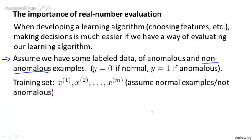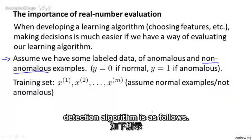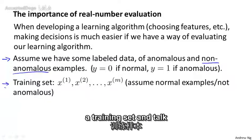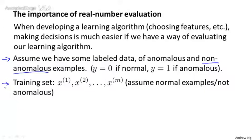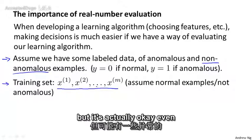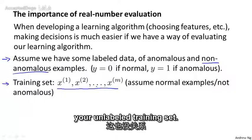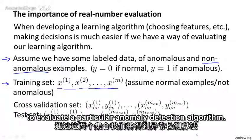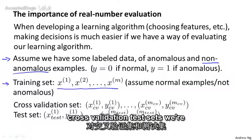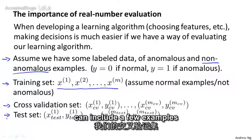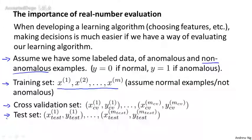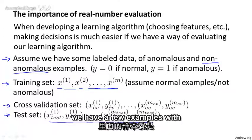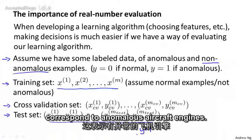The process of developing and evaluating an anomaly detection algorithm is then as follows. We're going to think of the training set as an unlabeled training set — a large collection of normal, non-anomalous examples. We'll also define a cross-validation set and a test set. For both the cross-validation and test sets, we're going to include a few examples that are known to be anomalous, so examples with y=1.